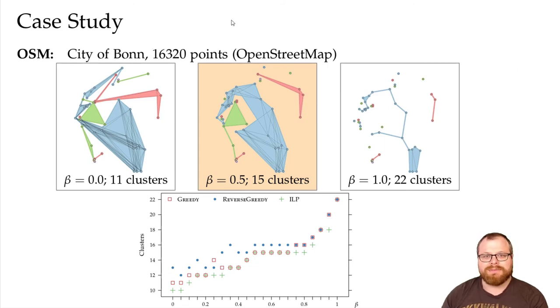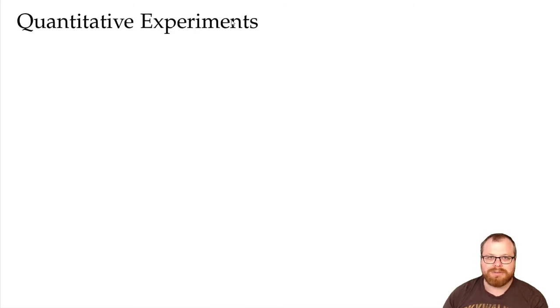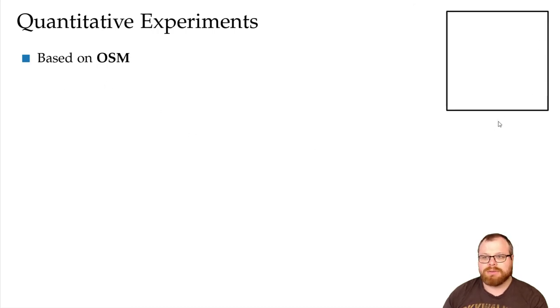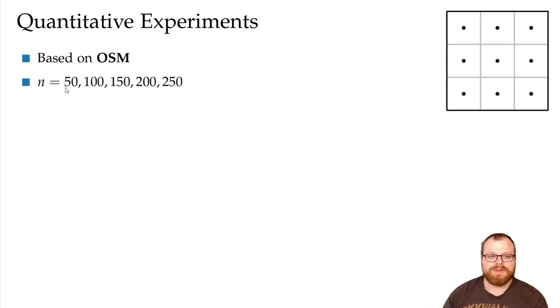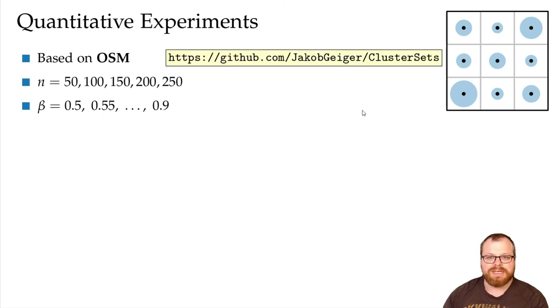Based on this dataset, we also conducted quantitative experiments on the running time and the quality of our solutions. To create smaller data from this large dataset, we took the region that the data lies in and split it into 9 squares. For different n from 50 to 250 we found the closest points to these centers. We ran experiments for beta equals 0.5 to 0.9 in steps of 0.05. You can download the code from GitHub.